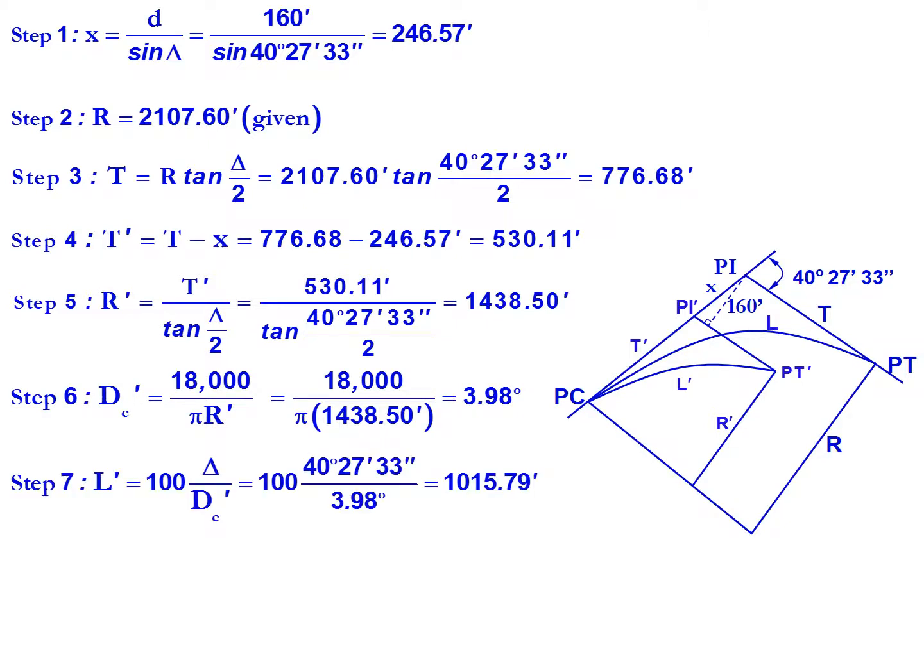We'll need to find our new length of curve in order to finally find our new point of tangency. So 100 multiplied by delta divided by the degree of curvature, our new degree of curvature, which is equal to 100 multiplied by 40 degrees 27 minutes 33 seconds divided by 3.98 degrees, gives us a new length of curve of 1015.79 feet.